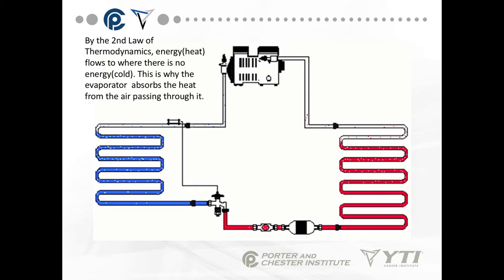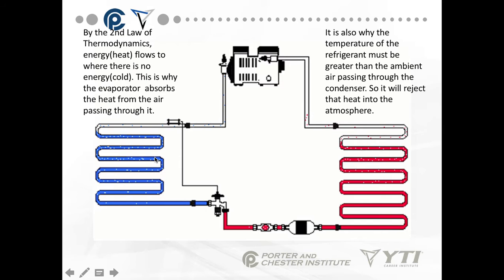The second law of thermodynamics says that heat, which is energy, flows from an area of high energy to an area of low energy — from hot to cold. That's why the evaporator absorbs heat from the air passing through it. If I blow warm air across the evaporator coil, the heat is absorbed into the coil because there's a lack of energy inside the coil. It's also why the temperature of the refrigerant must be lower than the ambient air on the evaporator side.